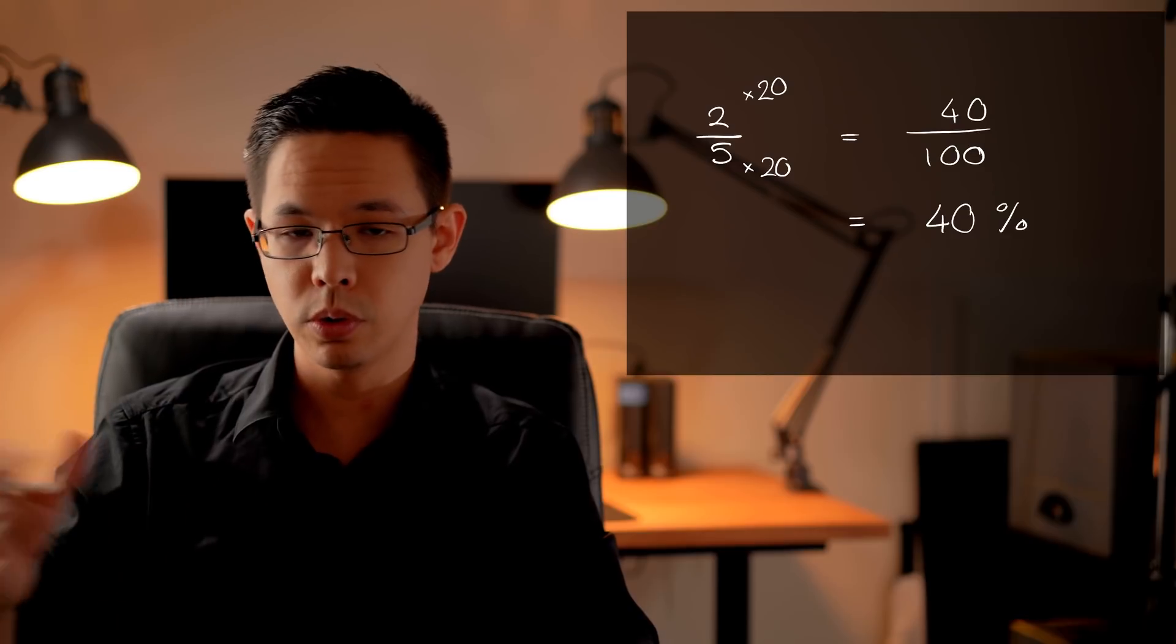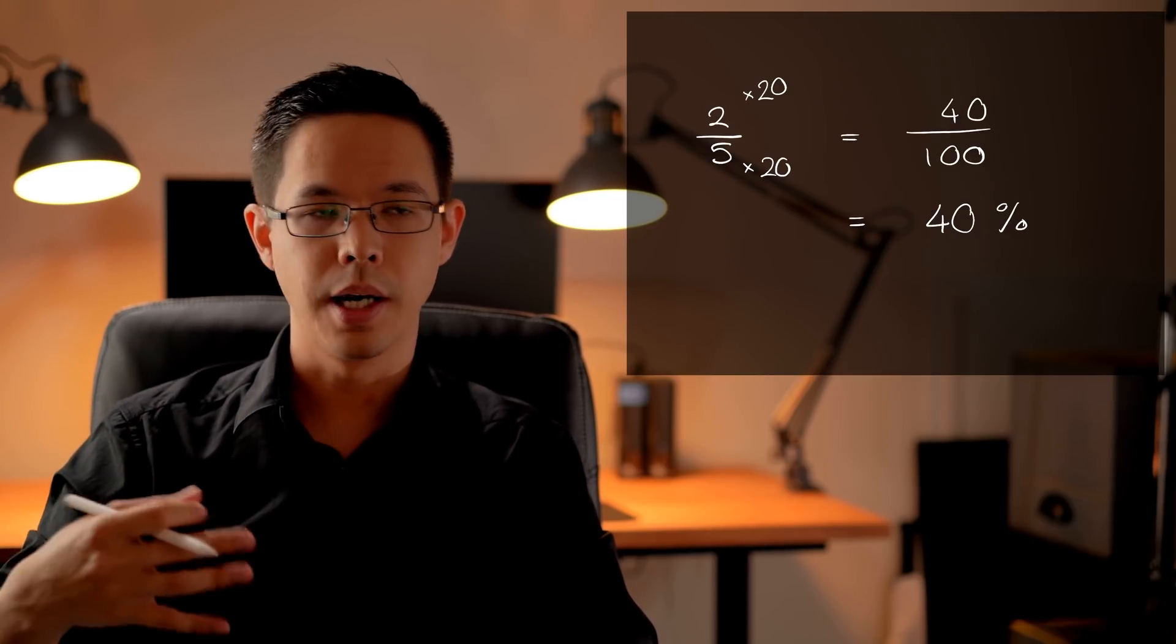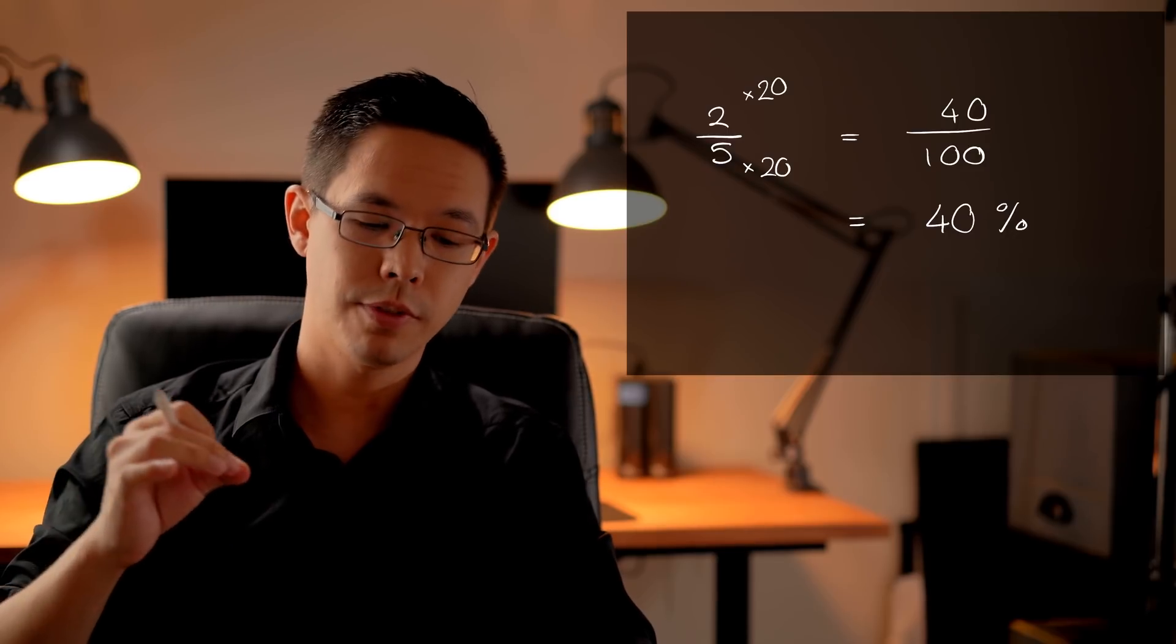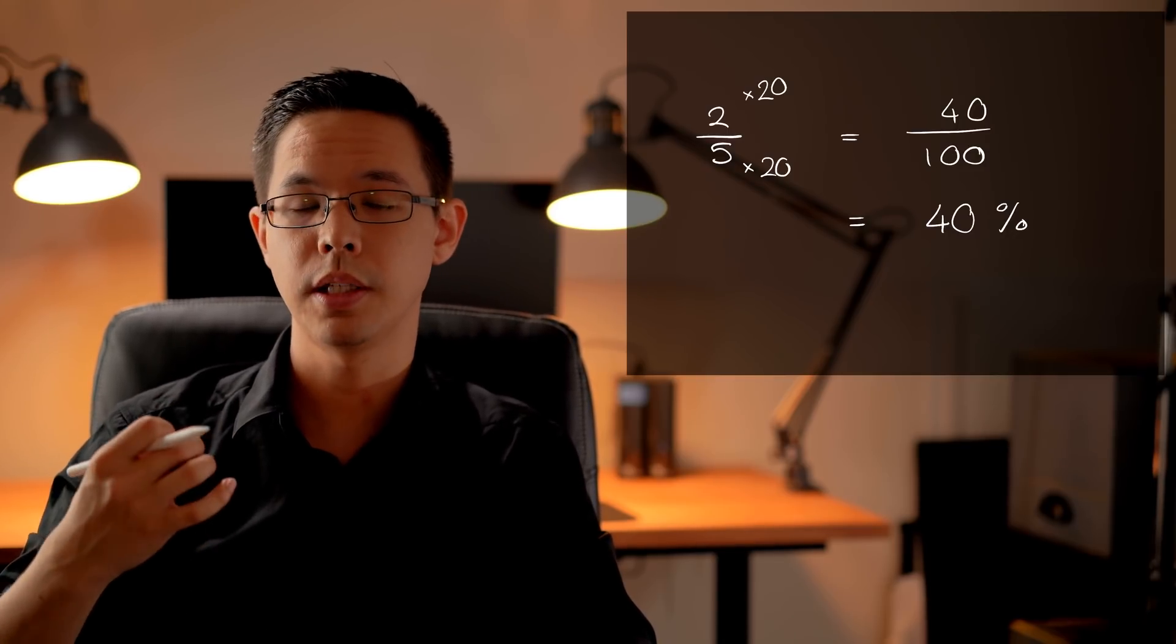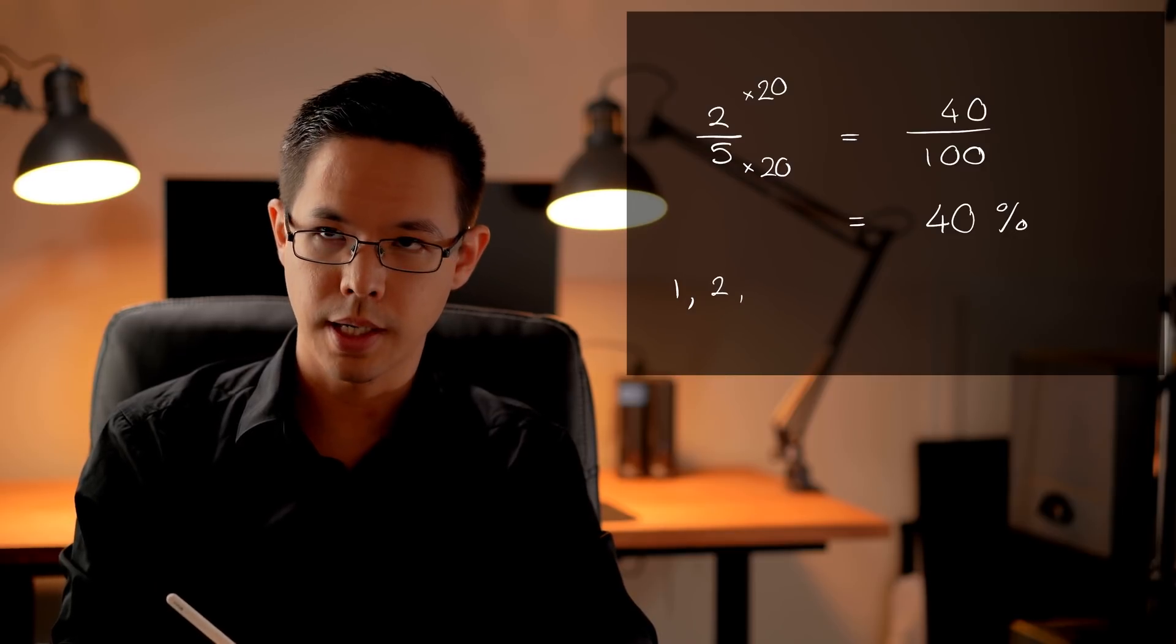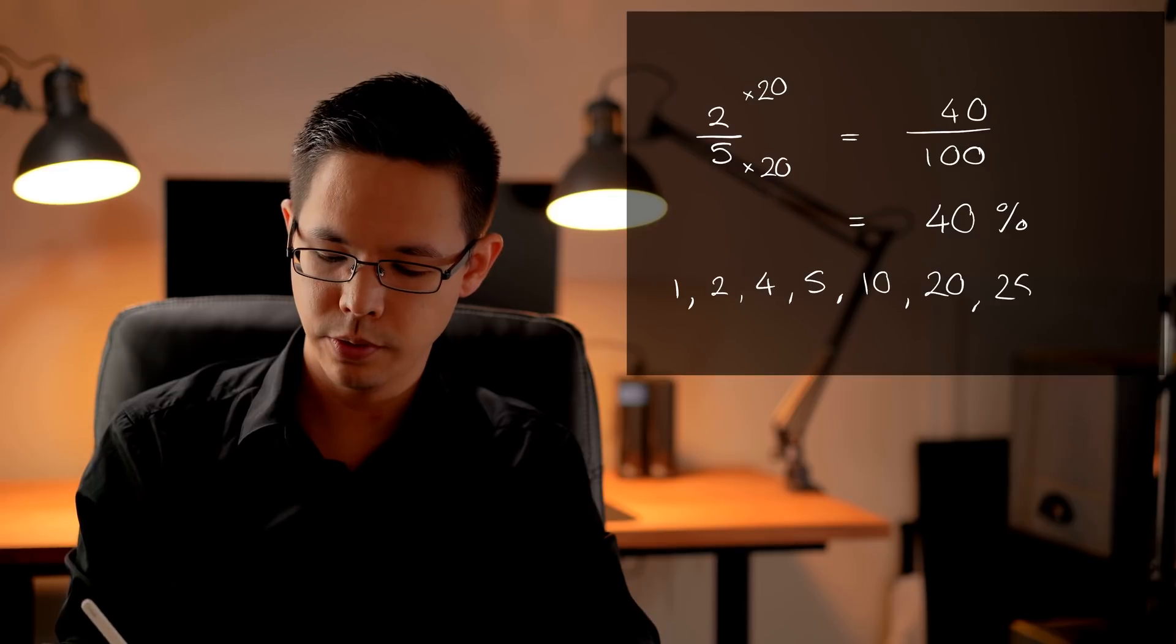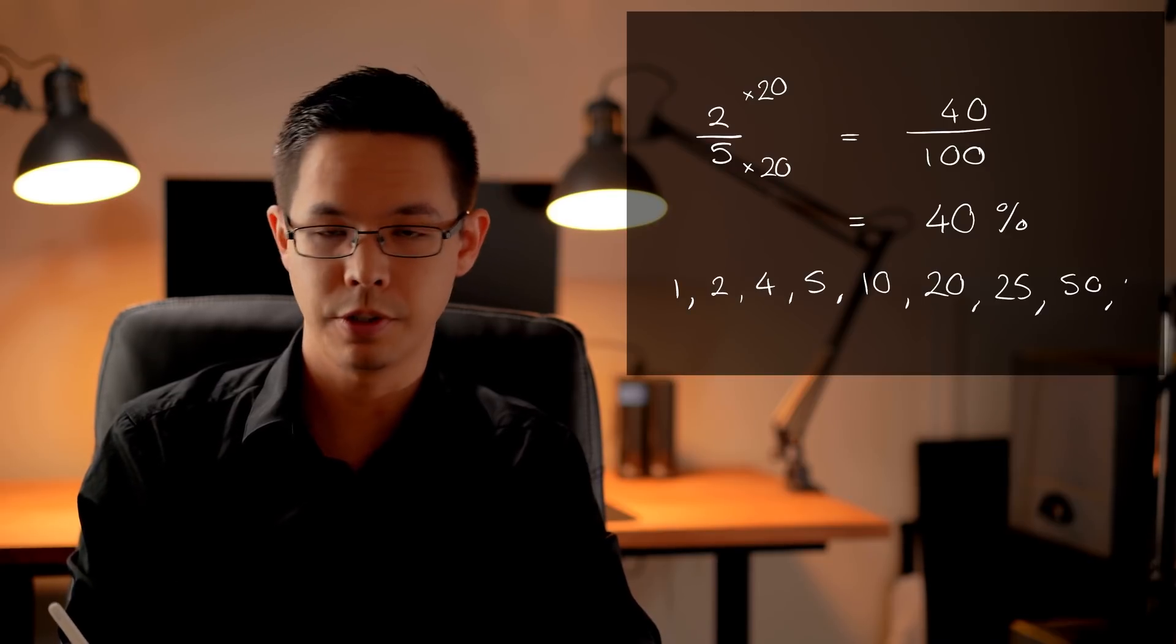Now this trick will work for all cases where the denominator can be converted up to 100. Another way of looking at it is that if the denominator is one of the factors of 100, 1 or a 2 or a 4, a 5, 10, 20 or 25, 50 or of course 100.